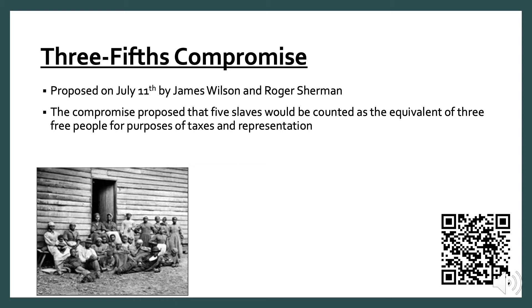Delegates from southern states feared that a Congress dominated by representatives from more populous northern states might act against the slave trade. Most northerners continued to favor gradual emancipation. By 1807, the slave population had steadily outgrown demand, and many southerners allied with opponents of the slave trade to ban the importation of slaves. However, it took the Civil War and the ratification of the 13th Amendment to finally end slavery.